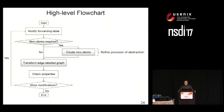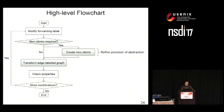This gives an overall high-level flowchart where DeltaNet is called iteratively each time a rule is inserted or removed. When such a modification happens, DeltaNet first asks: are new atoms required? If so, it creates the new ones needed, including any atom splitting. Either way, it then transforms the edge-labeled graph so we can check the properties. This happens repeatedly for each modification to the forwarding table, so it needs to be highly efficient.